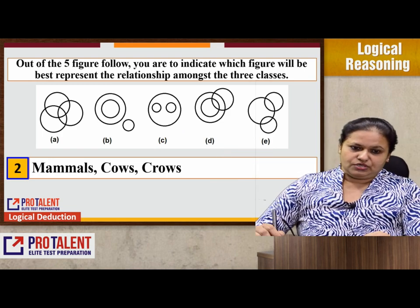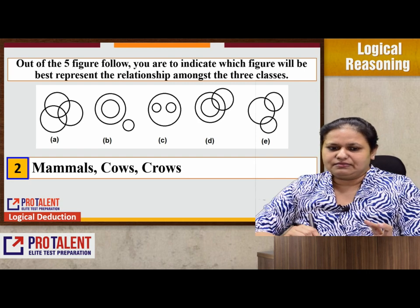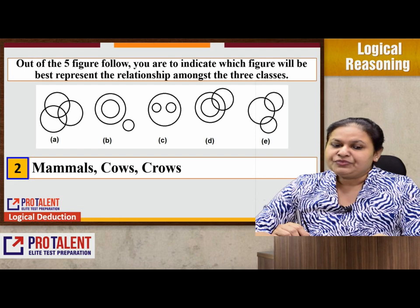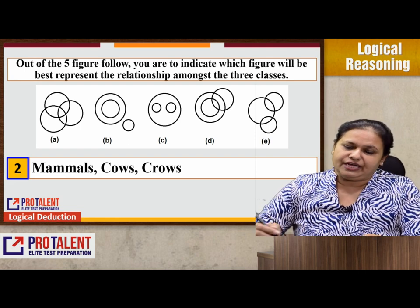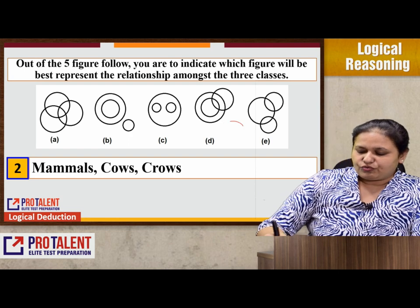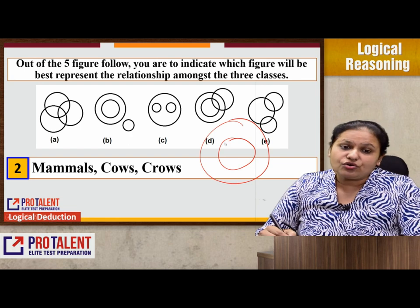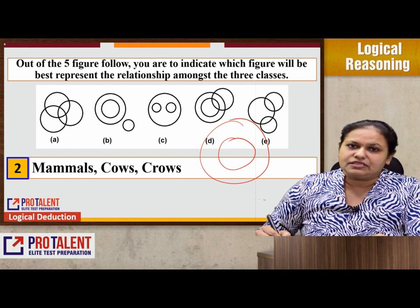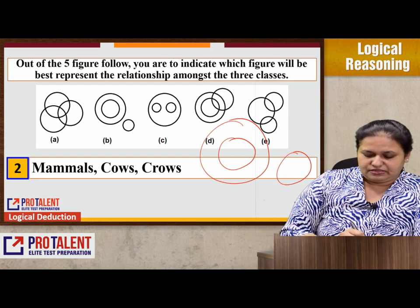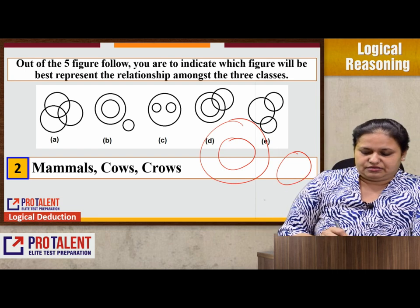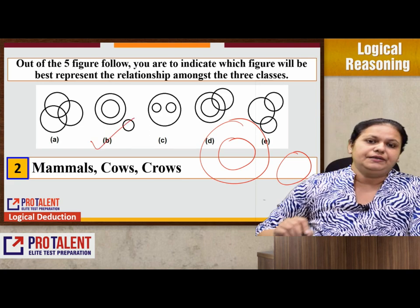Moving on to the next question: mammals, cows, and crows. Here you need a little bit of general knowledge. The milking animals which we call mammals will be one group. Cows are going to be part of it, and crows, which are not mammals — they are birds. So the best relation I can develop between mammals, cows, and crows is going to be option B.